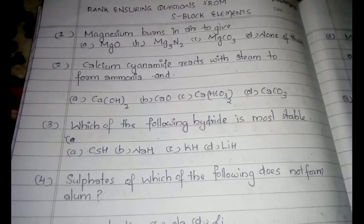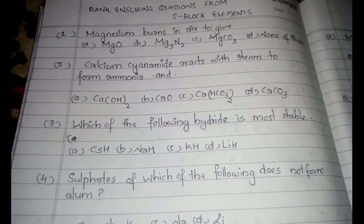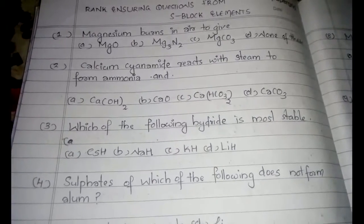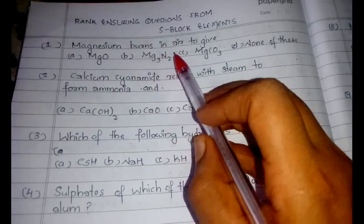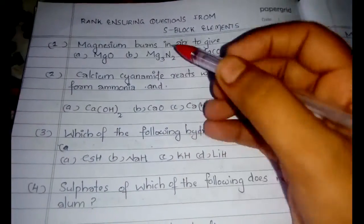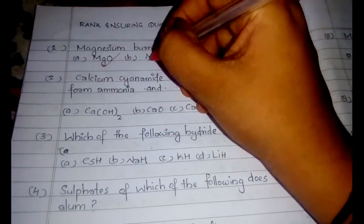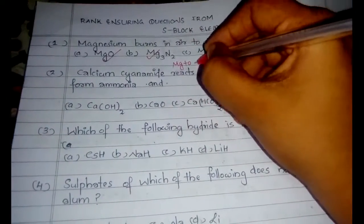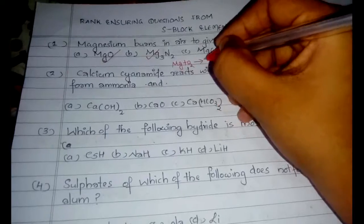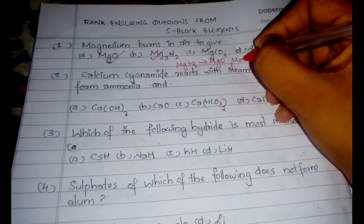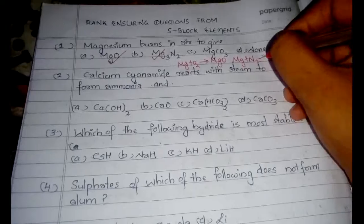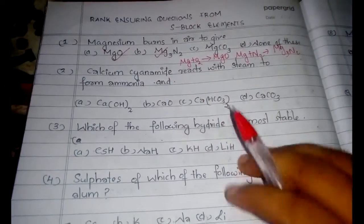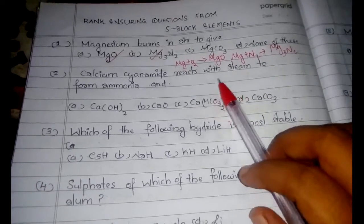I won't give explanation for many questions because some questions just need to be done. First question is regarding a reaction: magnesium burns in air to give — the answer is both option A and option B, because air contains both oxygen and nitrogen. With oxygen: Mg + O₂ gives MgO, and with N₂ it gives Mg₃N₂.